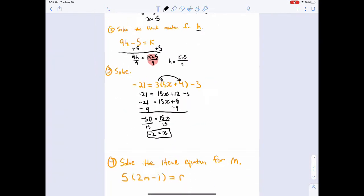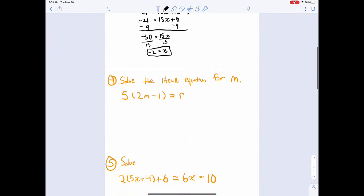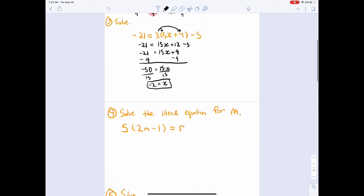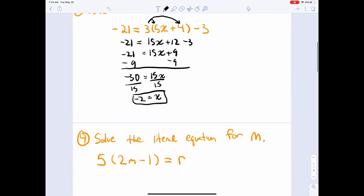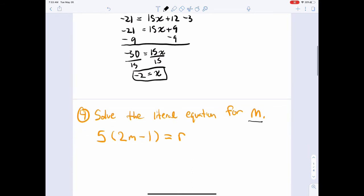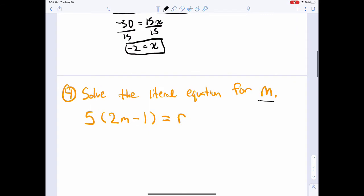There you go. All right, number four, solve the literal equation for m. Same idea but there's letters now, but you're still going to follow the same steps. Get m by itself. Okay, well m is inside parentheses right now, so that's going to be quite difficult. So let's get rid of these parentheses by distributing. So that's going to be 10m minus 5 equals r.